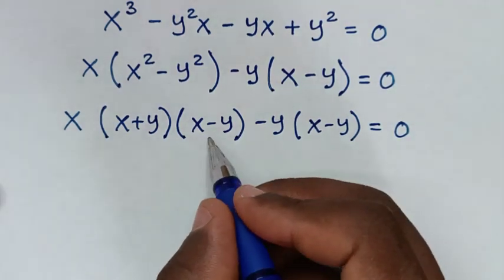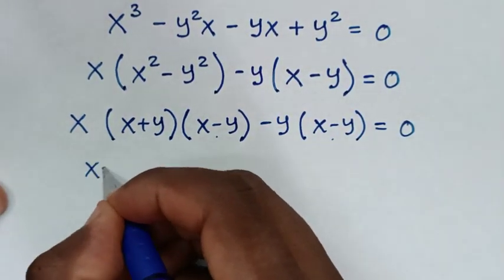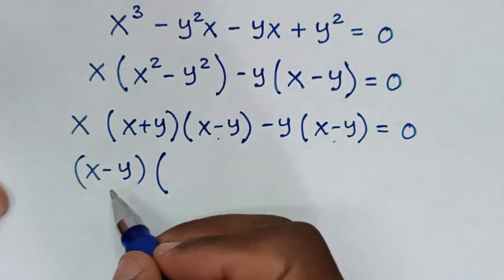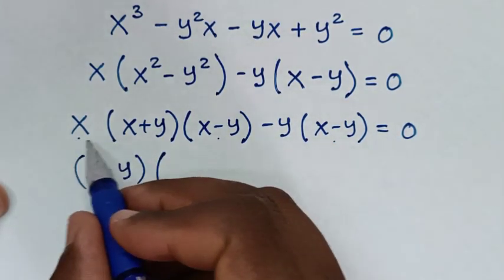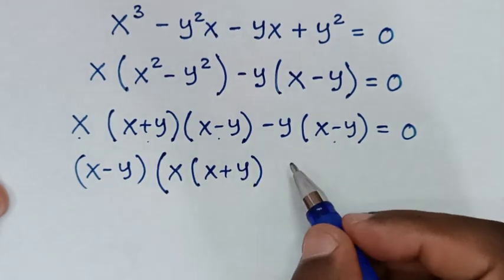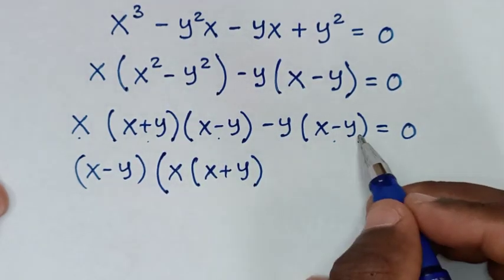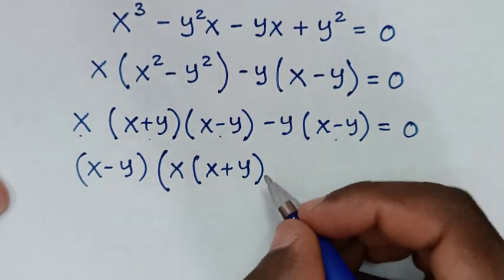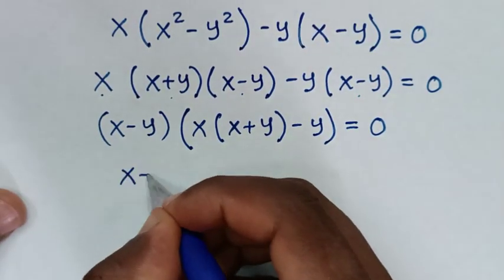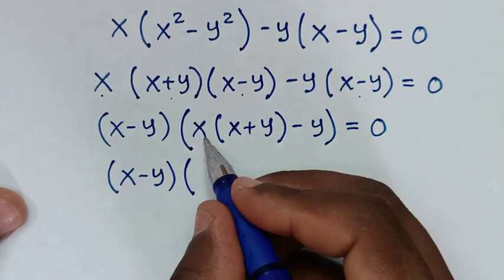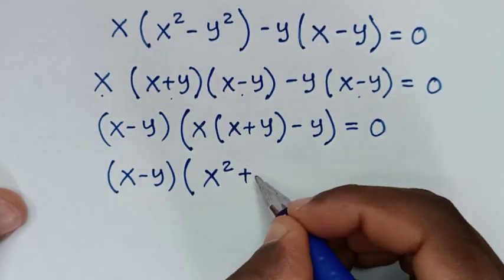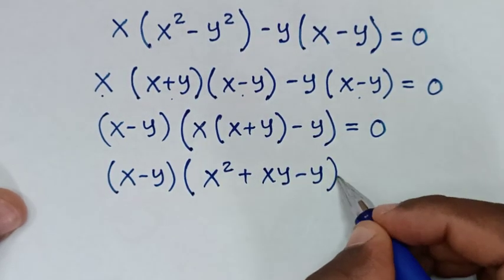In the next step, (x minus y) is common, so we factor it out: (x minus y) times [x(x plus y) minus y] equals 0. Expanding inside the bracket: x times x is x², x times y is xy, then minus y, giving (x minus y)(x² plus xy minus y) equals 0.